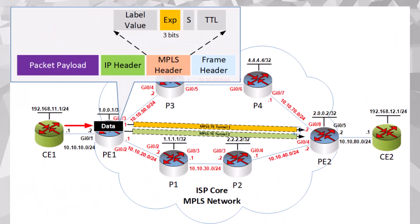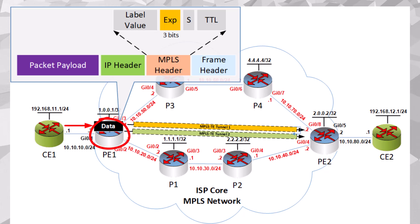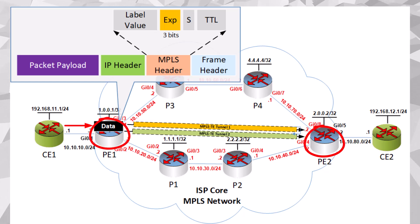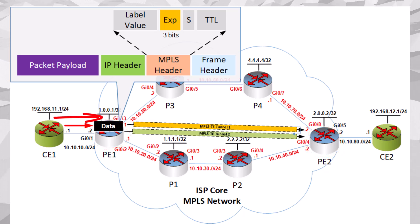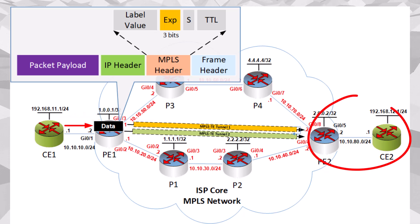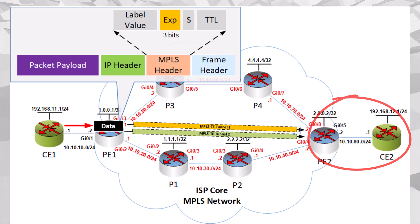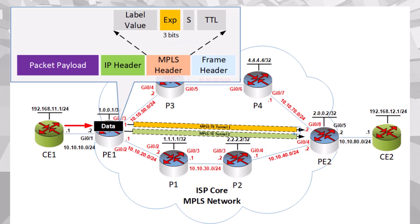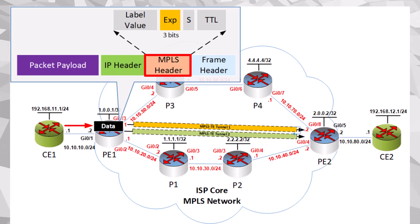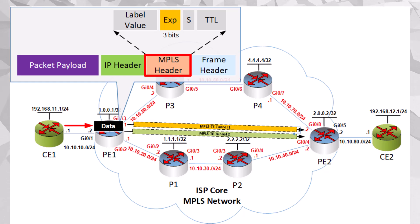Let's say we have two tunnels that go from this head-end router, PE1, to this tail-end router, PE2. When a packet arrives on PE1 from CE1, for example, and it's destined for some destination behind PE2, the MPLS configuration within the PE1 router will add an MPLS header in preparation for sending it over the MPLS topology. This is normal — this is what we've seen so far, nothing new here.